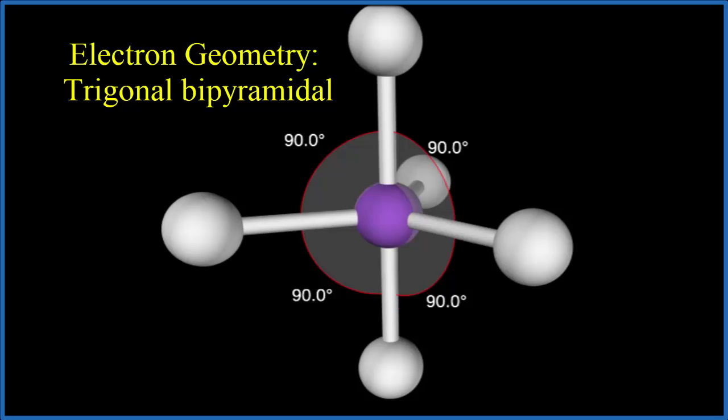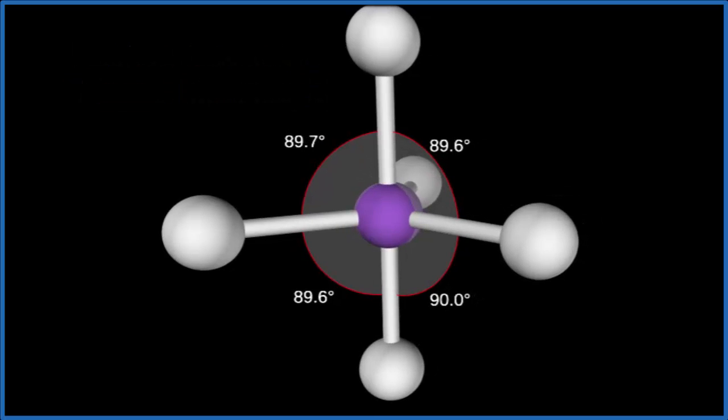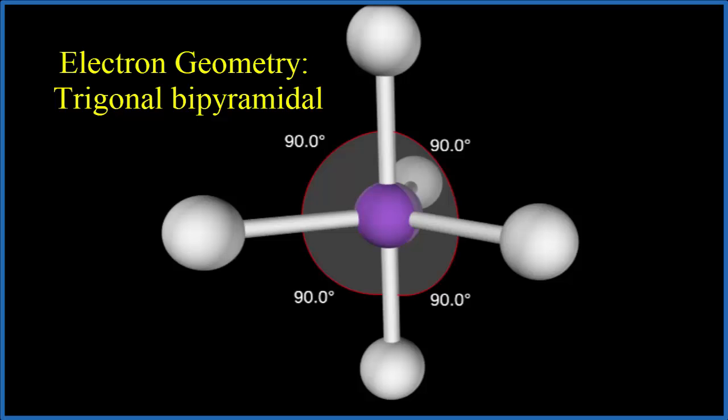You can see the bond angles here. The bond angles for the equatorial atoms, the ones on the equator, are 120 degrees. If we look at the electron geometry, it would also be trigonal bipyramidal because we don't have any lone pairs.